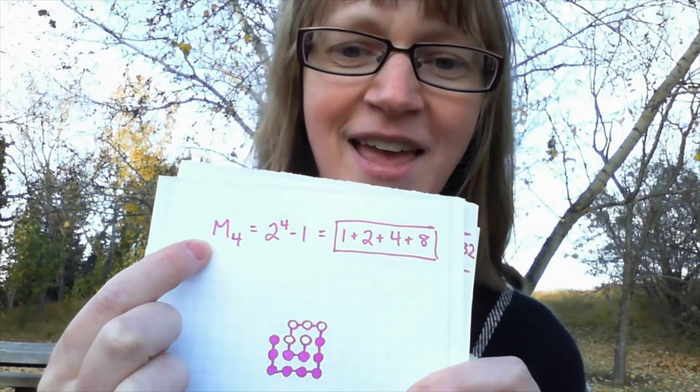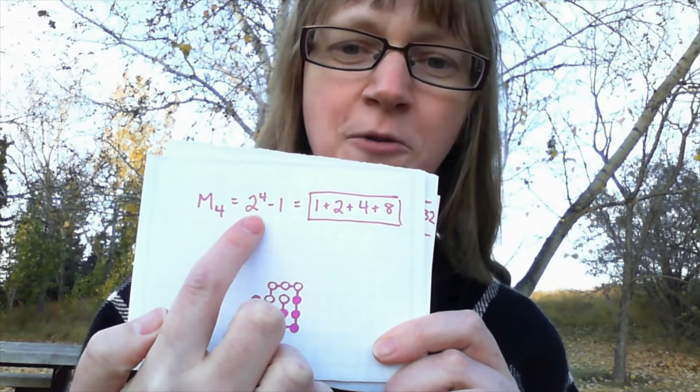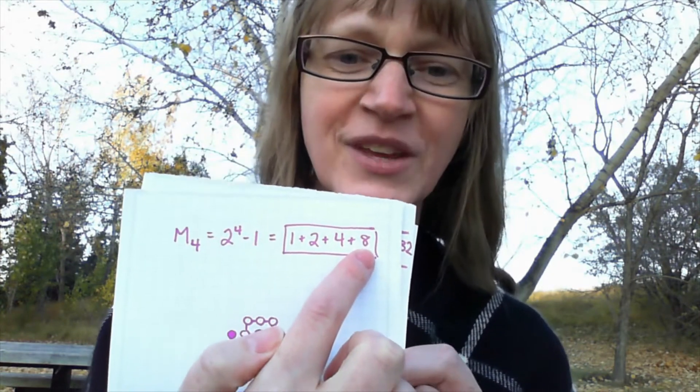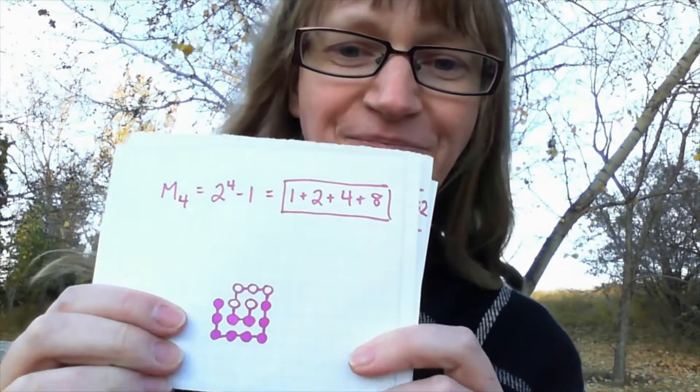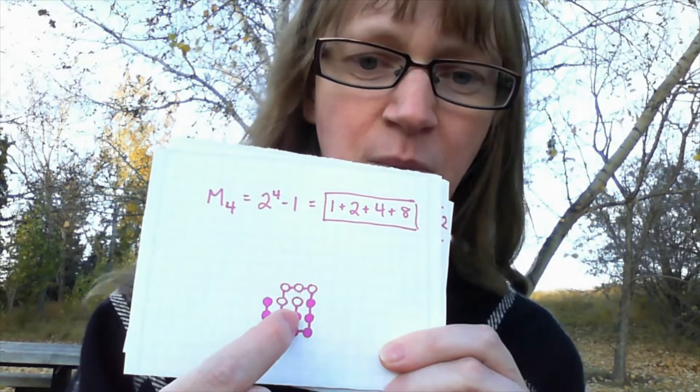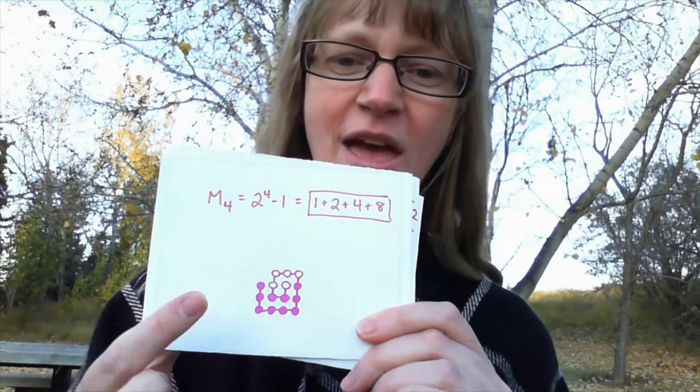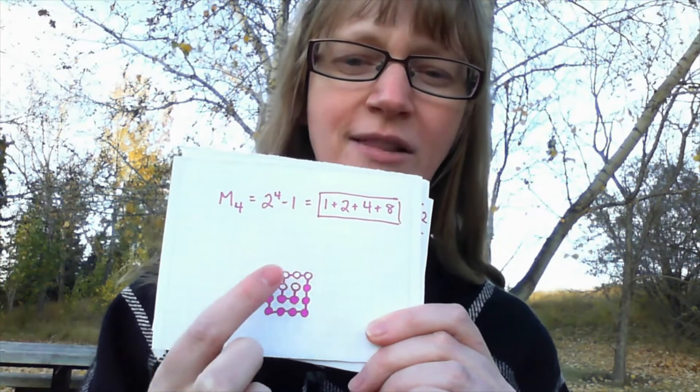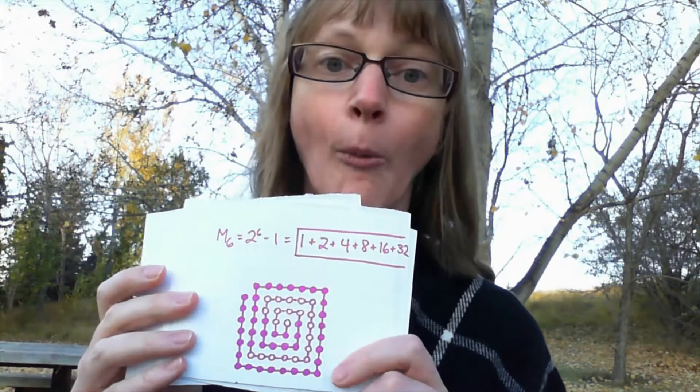Now let's try the Mersenne number four where we have two to the power of four minus one. That is one plus two plus four plus eight. So there's four terms just as we've come to expect with the binary representation. A string of four ones when the exponent is four. We get one plus two plus four plus eight. We have an interesting square-like pattern with one missing right here. Does that hold up? Oh my goodness it does! Here's M6. Two to the power of six minus one. We have one plus two plus four plus eight plus 16 plus 32.